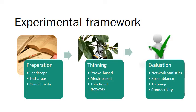In the second phase, three existing algorithms are used to prune the source data. The third and last phase evaluates the results for the individual test areas and compares the results for the three algorithms. The evaluation is based on three criteria: resemblance, thinning and connectivity.